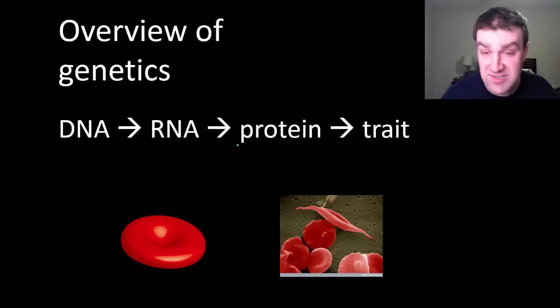A very famous example of how this model has helped us understand this better is the genetic disorder sickle cell anemia. Most people have red blood cells that look like this, but people who have sickle cell anemia maybe inherited a different set of DNA code from their parents that caused their red blood cells to look like this.